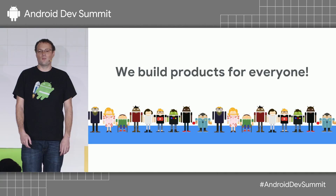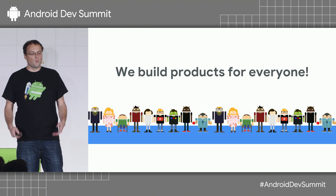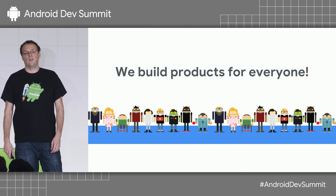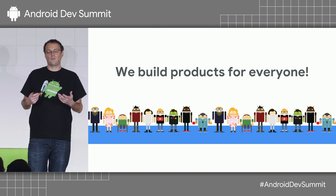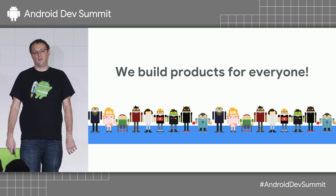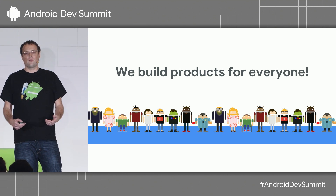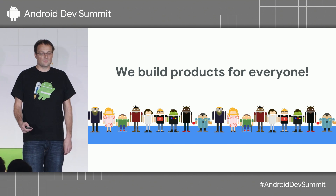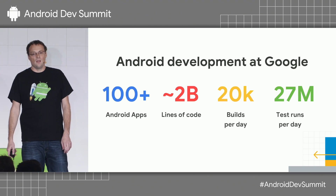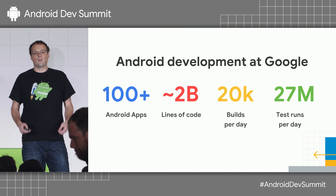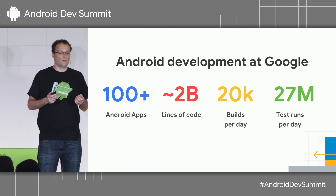At Google, we believe in diversity and inclusion, and we build our products for everyone. But for us developers, this means we also have to test for everyone. So let me tell you a little bit about how we develop and test software at Google, and also talk about the scale at which we do Android development here.